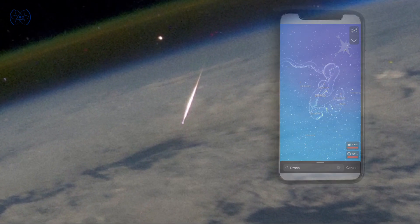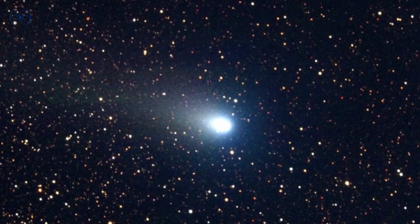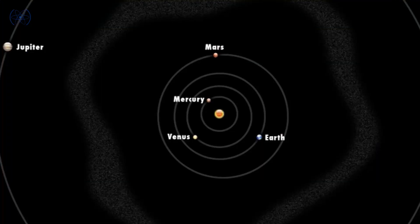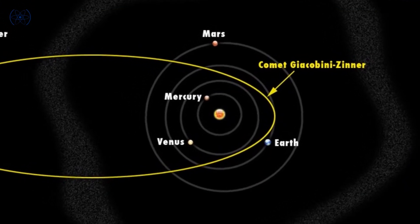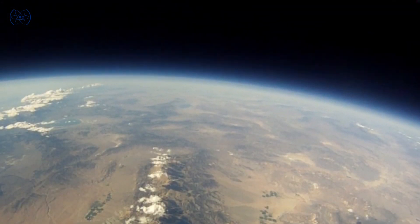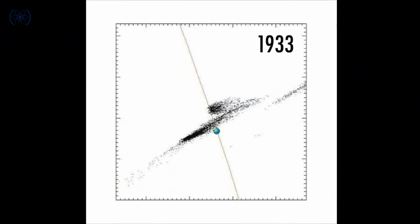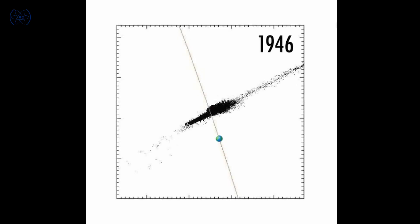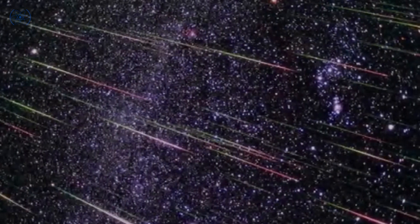The Draconid shower comes from the dust of the comet 21P-Giacobini Zinner, which orbits the Sun approximately every six and a half years. The Draconids are usually unremarkable, but very rarely Earth will pass through so-called networks of debris left behind by the comet, resulting in an outburst that could produce thousands of meteors per hour.